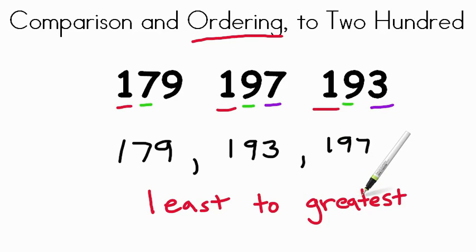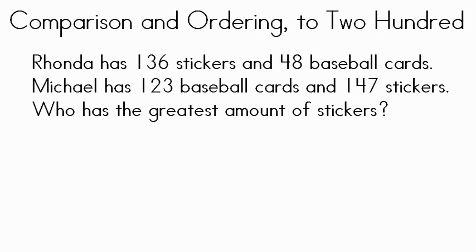If I reverse that and ask you to go from greatest to least, 197 would be first, then 193, and then 179. Nice job. To review, let's solve this word problem.